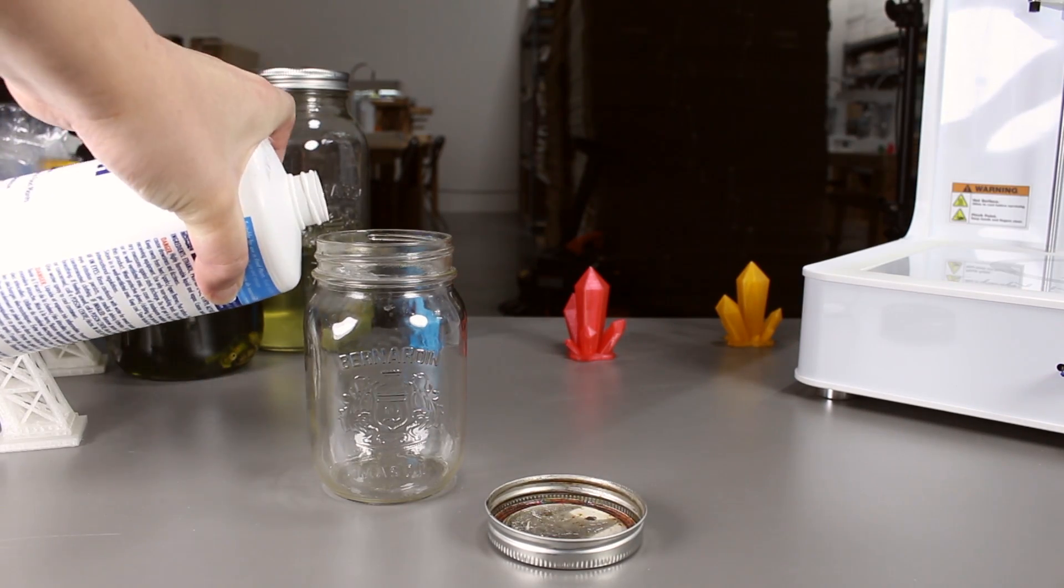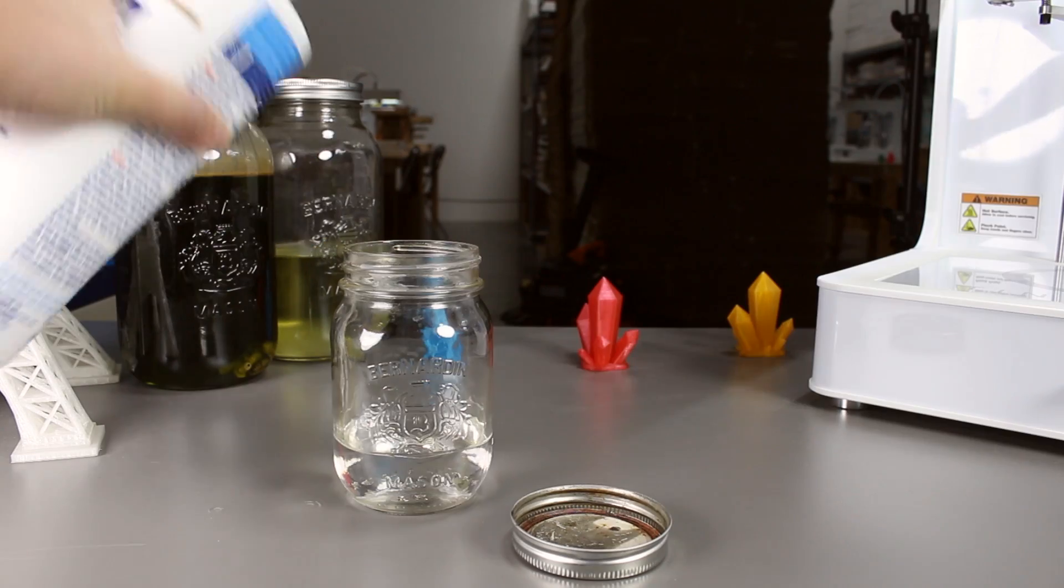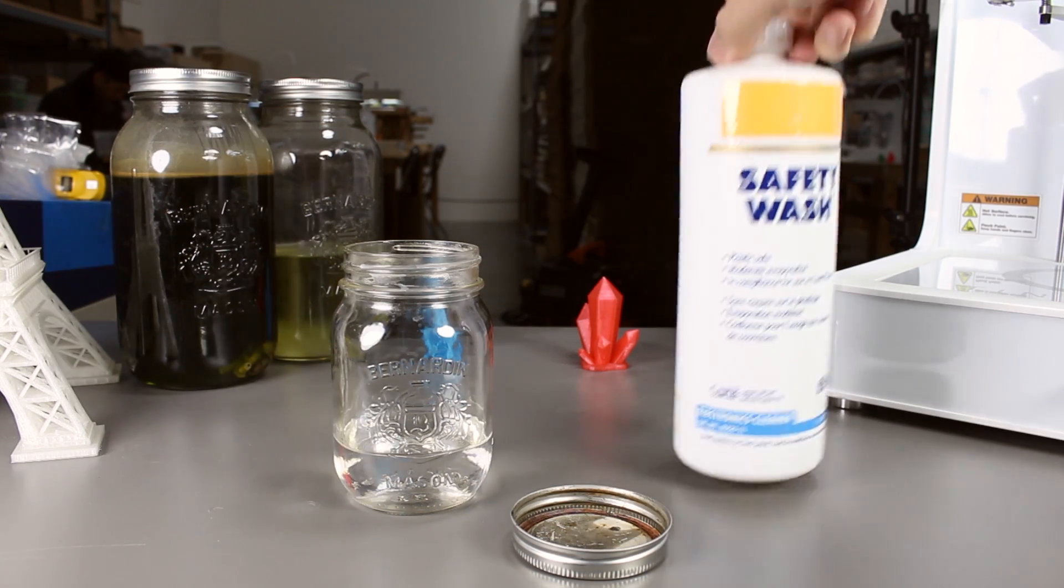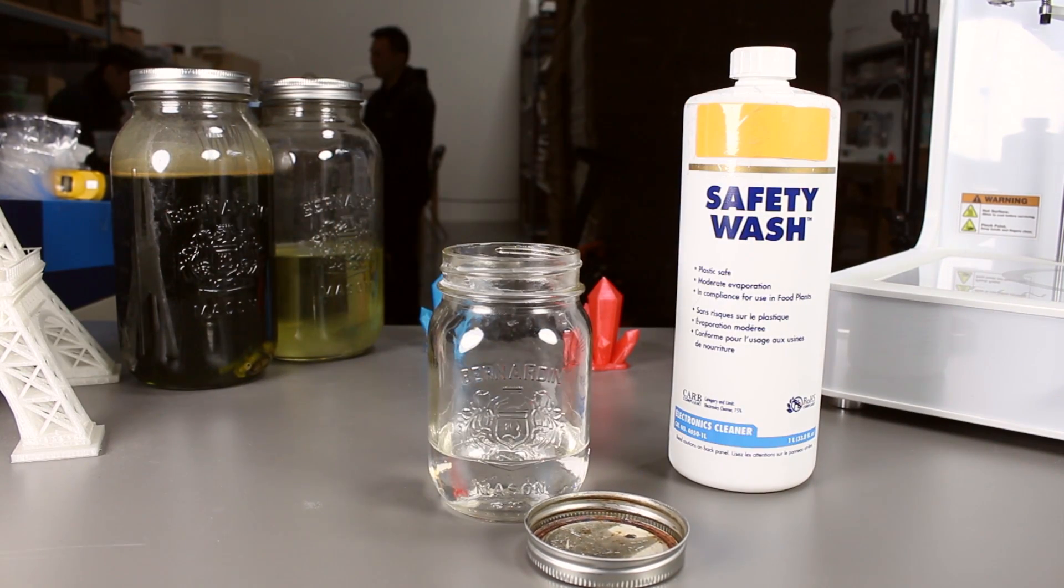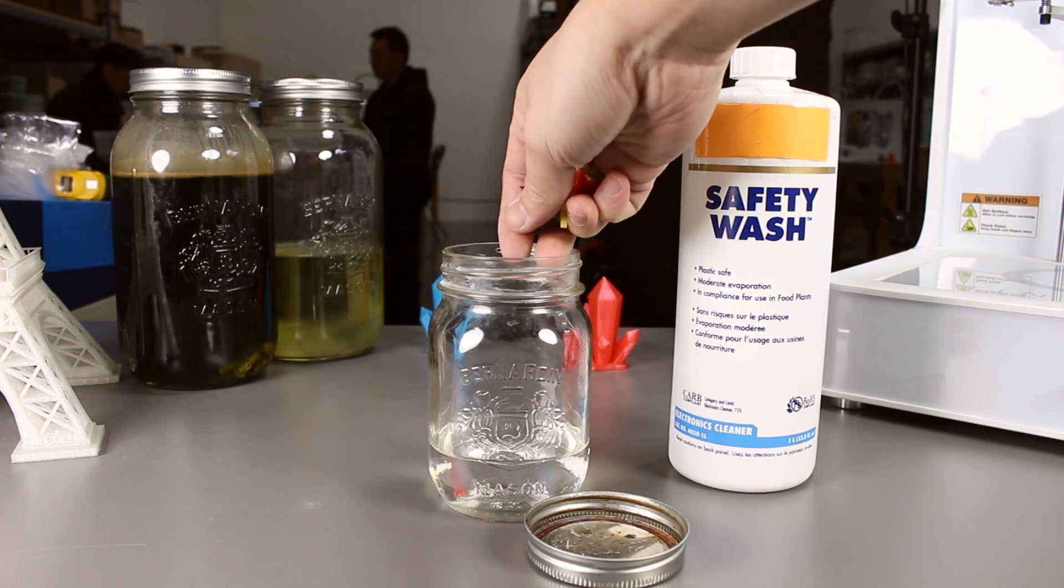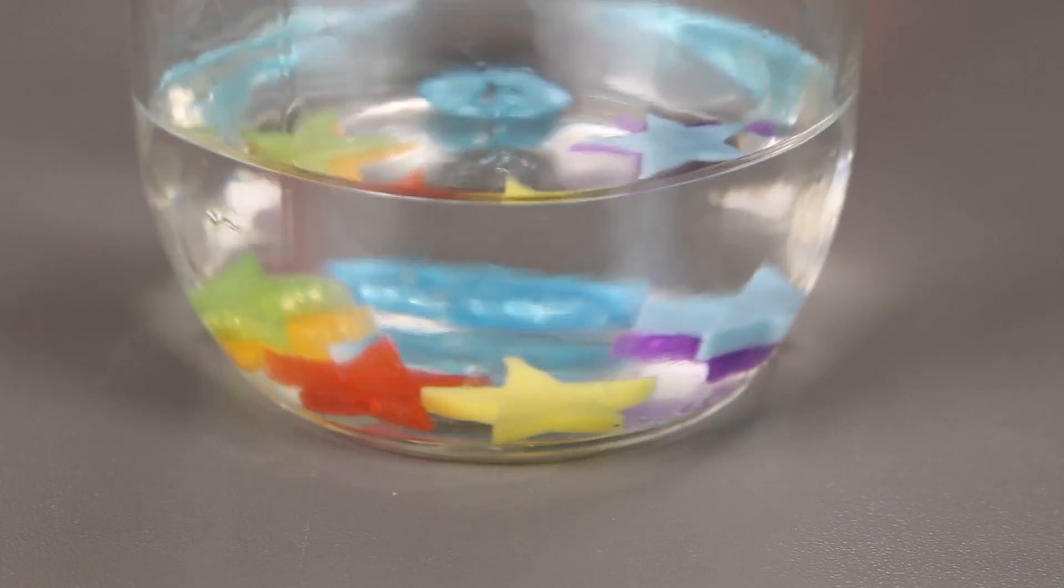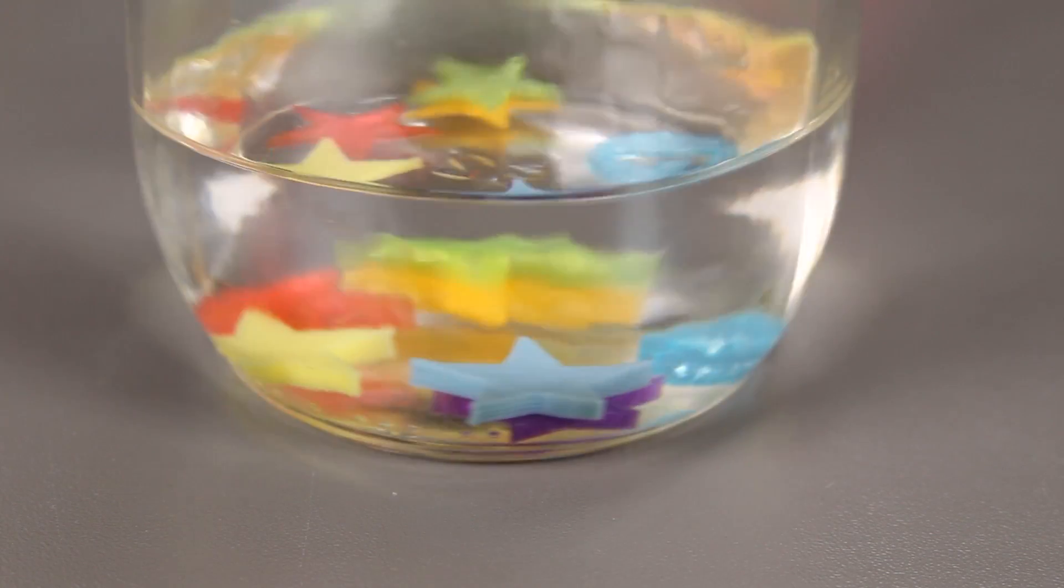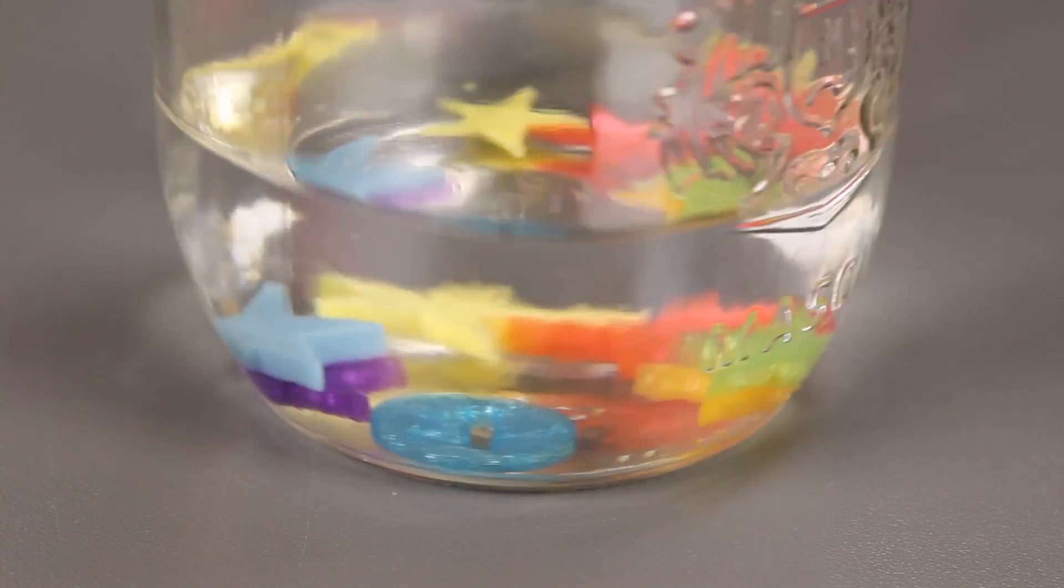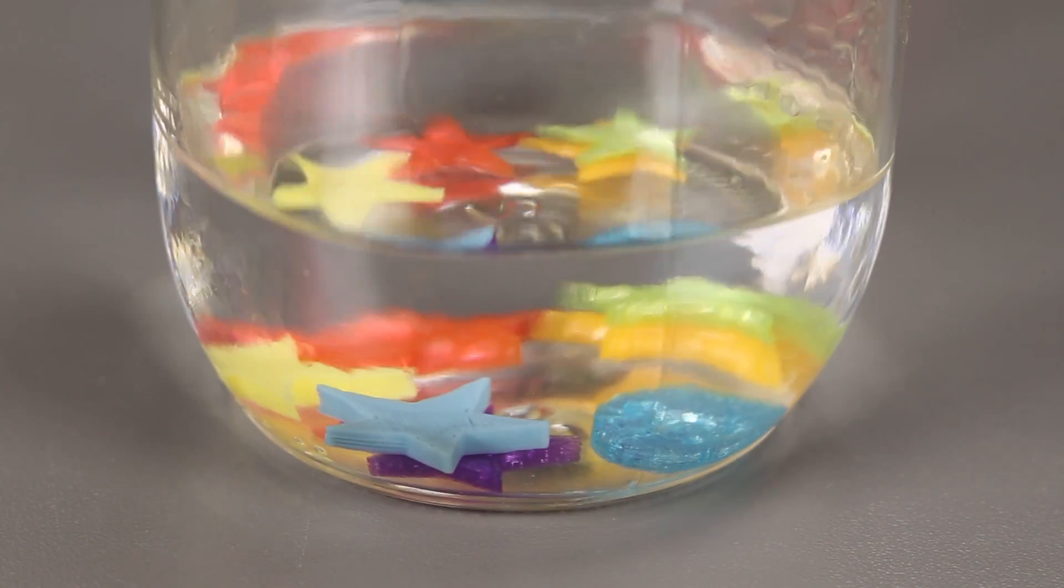We'll start by pouring it into the mason jar. Afterwards, we drop our prints into the mason jar and wait for the ethyl acetate to work its magic. I'm not too sure how long I should leave it in there for it to work, so I'll just leave it in there for a couple hours.